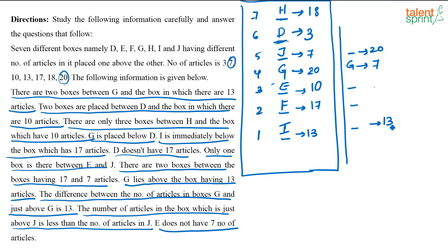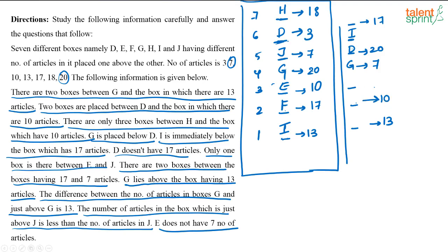In Case 2, G is 7 and the box above is 20. With two boxes between G and the 13-article box, and two boxes between 7 and 17, the position of 17 is fixed. All 7 positional slots get filled. However, applying the clue that I is just below the 17-article box forces I into a specific spot, making D occupy the adjacent position. But then two boxes between D and 10 would require 10 to fall where I already sits — a contradiction. So Case 2 fails, and Case 1 is the correct arrangement.